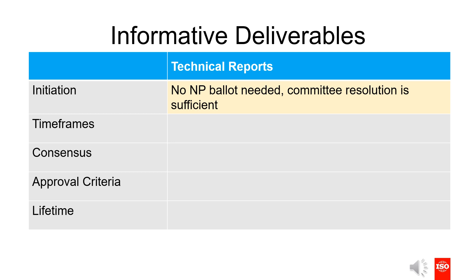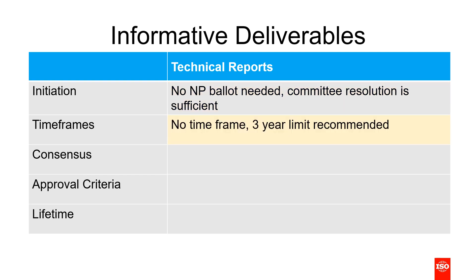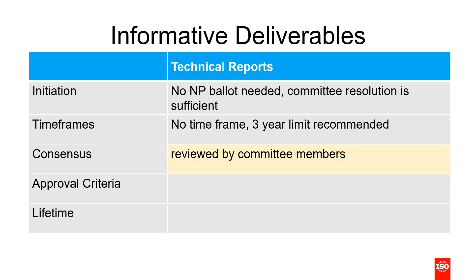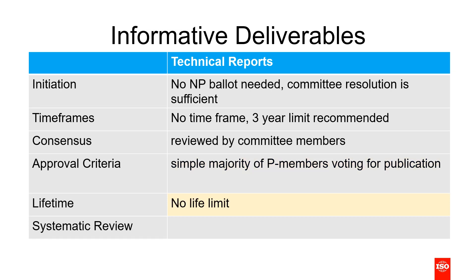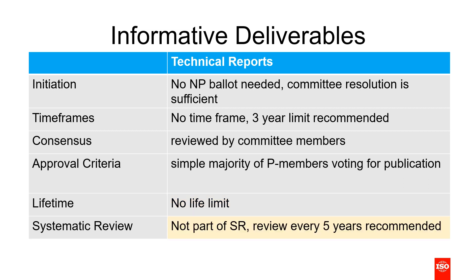TRs do not need a Form 4 new project proposal to be started; a committee resolution is sufficient. While technical reports do not have a restricted development timeframe, they should take no longer than three years to produce. The consensus level for technical reports is the same as a PAS — only committee members review the draft and approve the publication of the TR, which can be achieved with a simple majority. Technical reports are considered a static deliverable as they only contain information and do not have a specific life limit. Furthermore, technical reports are not part of the systematic review process, but still need to be reviewed by the committee on a regular basis — we recommend every five years — to ensure the information is still correct and relevant.